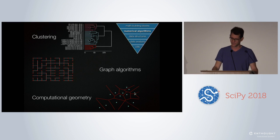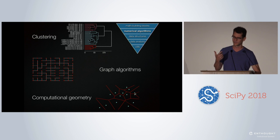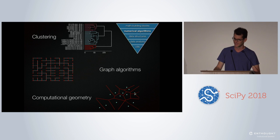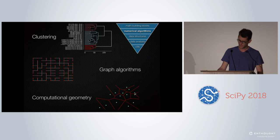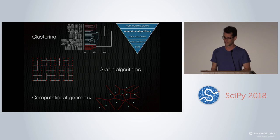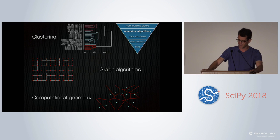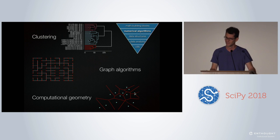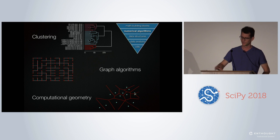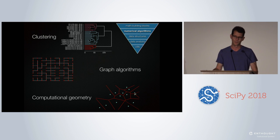Then graph algorithms. That solves problems like: if I have to visit 10 cities and I know the distance between each two cities, what's the shortest path to visit all 10? Something you probably need less often, but if you need it, it's quite powerful. And the last one, computational geometry — if you have a 3D object and a bunch of points measured on the surface, how do I calculate the surrounding volume? It doesn't have to be 3D; it can be any dimension.